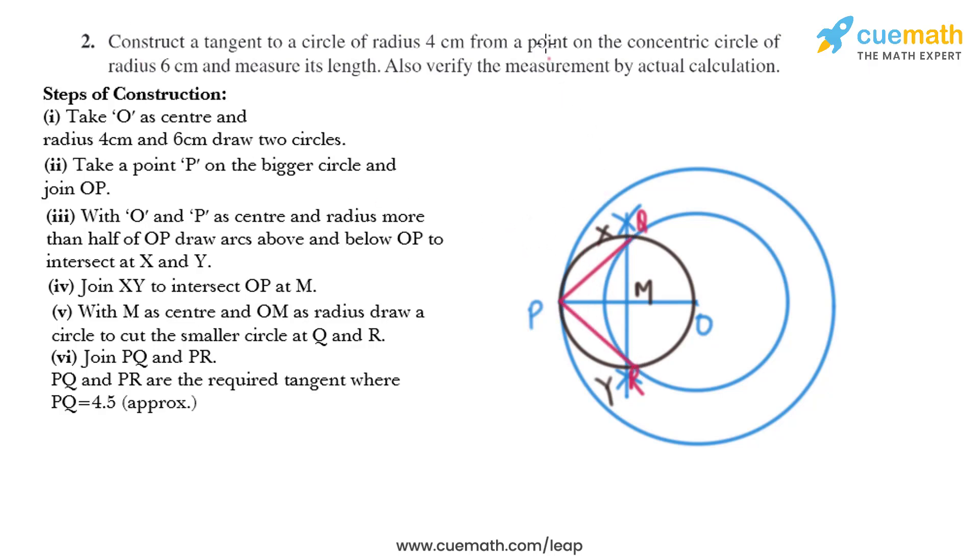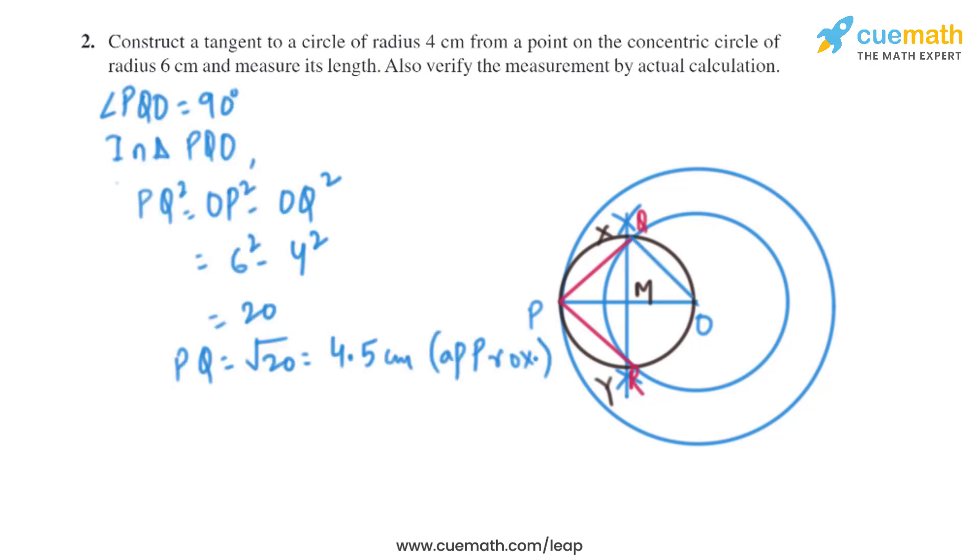So we have got PQ and PR as the required tangent. Now let's do the justification of this construction. So we need to join Q and O. So we'll get angle PQO equal 90 degrees. And if we consider triangle PQO and if we use Pythagoras theorem,